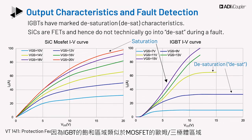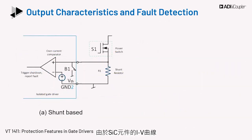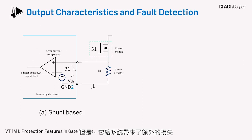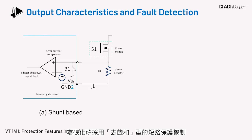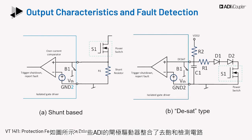There are two typical methods to detect a fault on a SiC device. The current shunt-based method can be used for SiC devices due to their IV curve, but it adds extra losses to the system. Most customers prefer a desat-type short-circuit protection, commonly called SCP, as the mechanism for silicon carbide. The desat detection circuit is integrated in some of the ADI gate drivers.